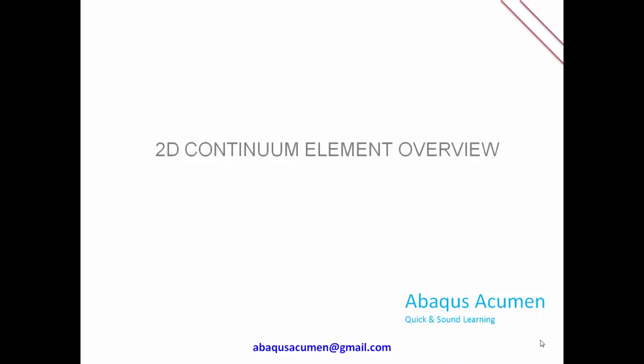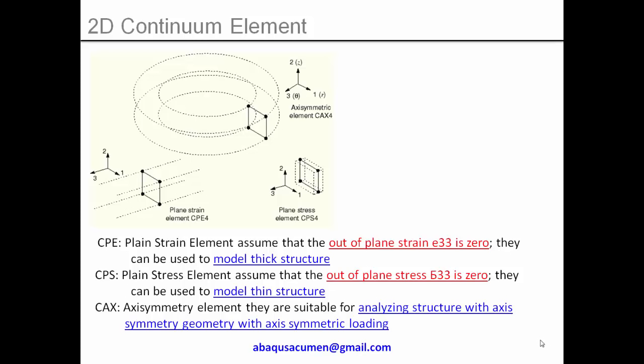Welcome to Abacus Acumen for quick and sound learning. Today's session will be on 2D continuum elements overview. In this video you are going to learn about plane stress, plane strain, and axisymmetry elements, and where we can use them. Abacus has a vast library; most people use 3D continuum shell or solid elements, but very rarely do people use the 2D continuum element. The name says 2D because you model in a two-dimension plane, but these elements actually represent a 3D model.